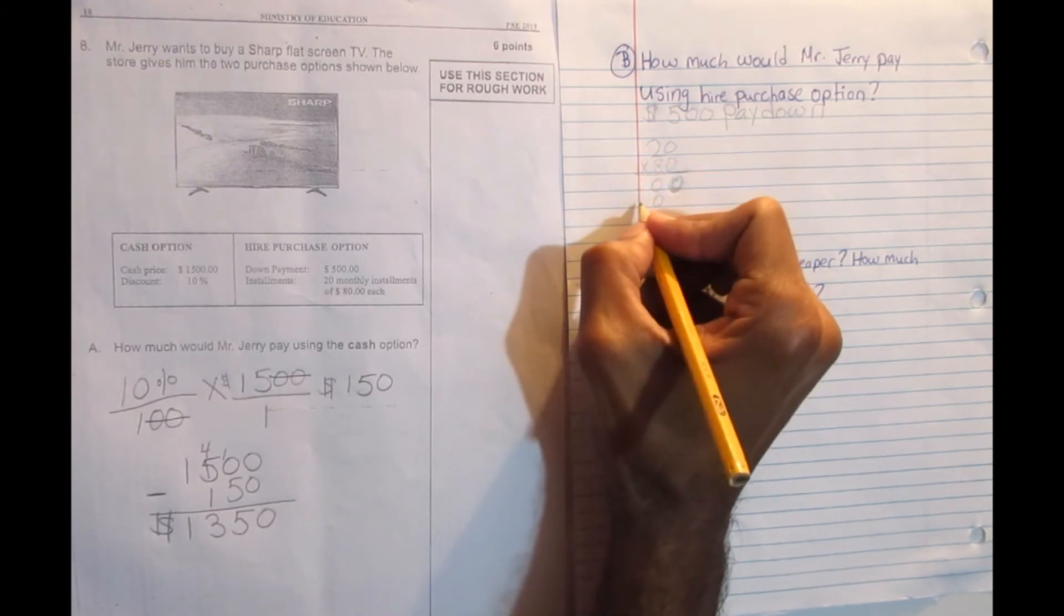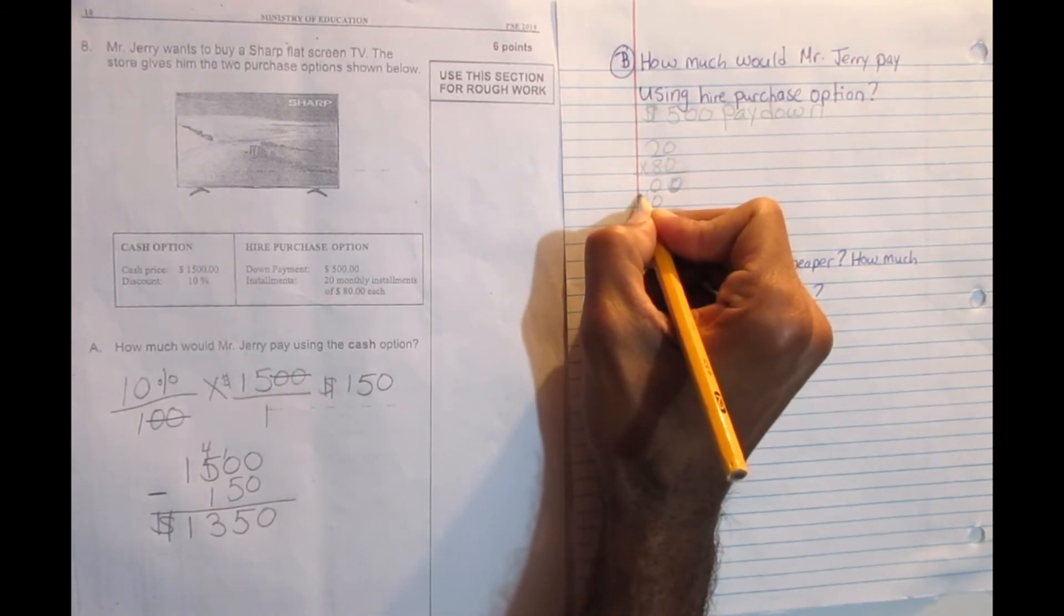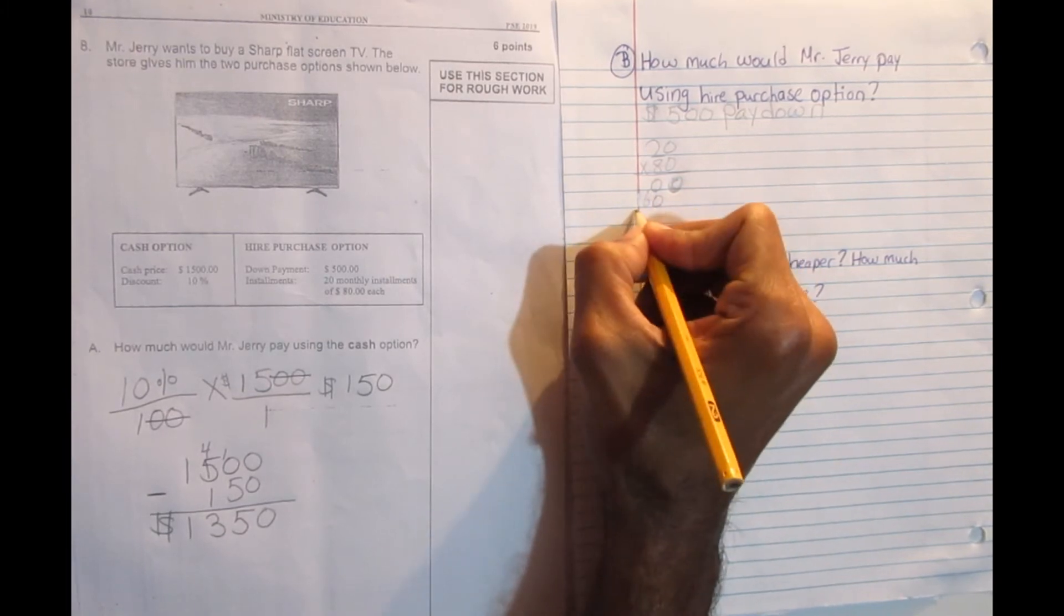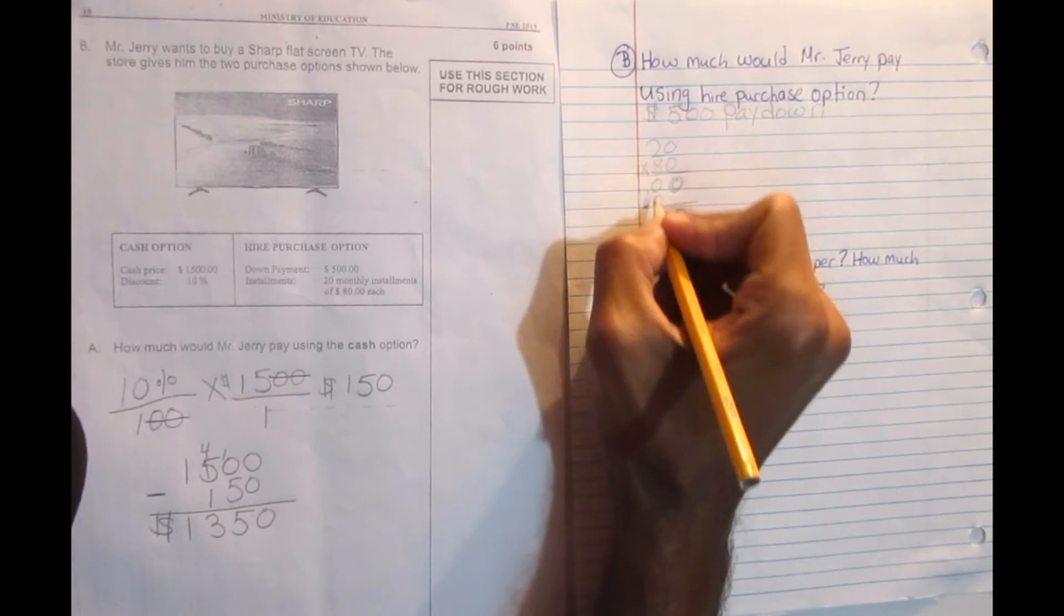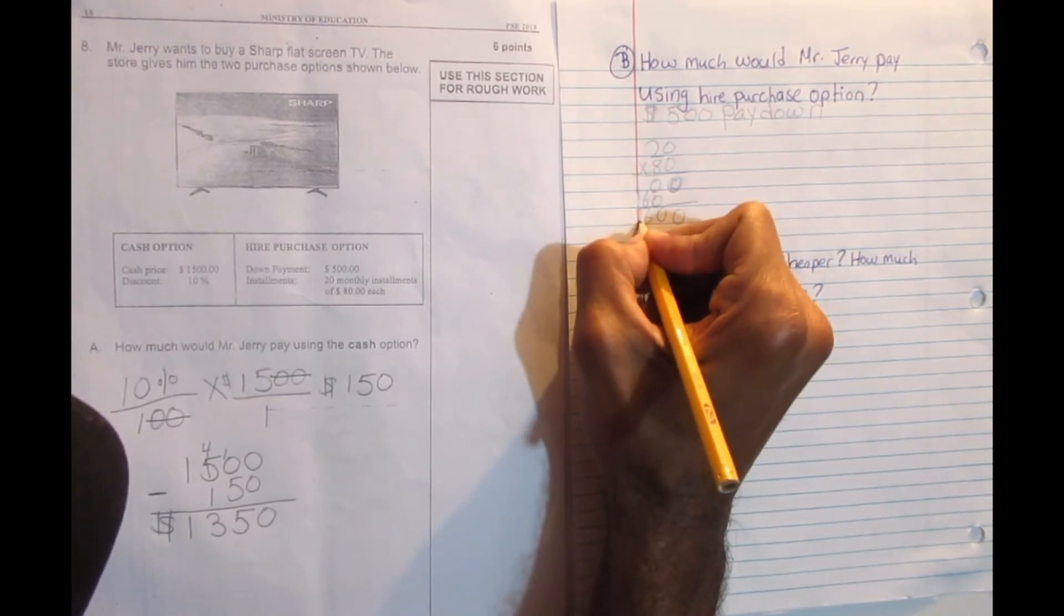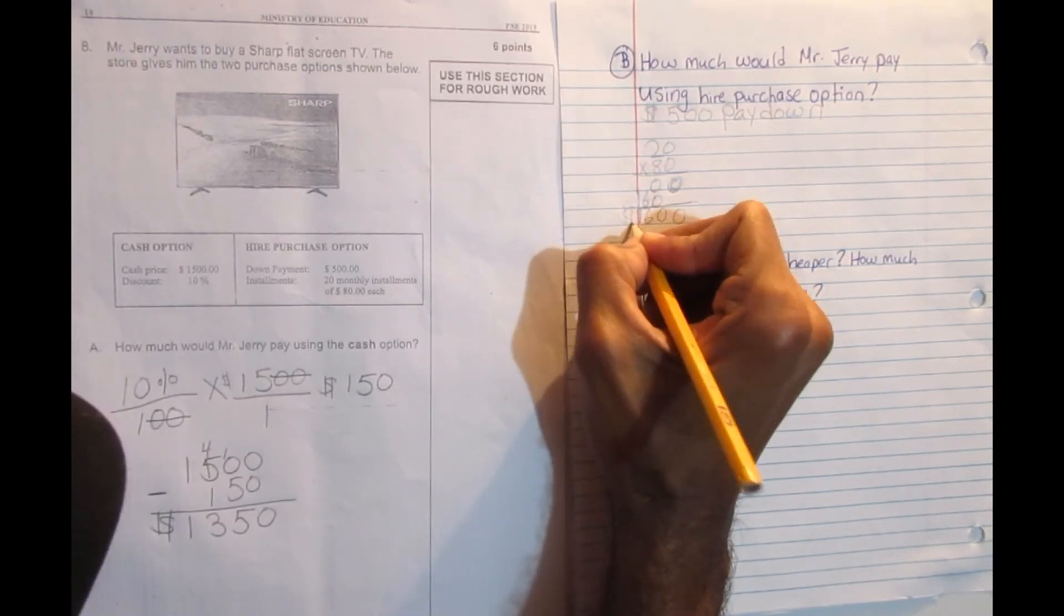So let me do the 1 so you could see it clearly. Alright, 16. Then I'm going to add 0, 0, 6, 1. And do my dollar sign.